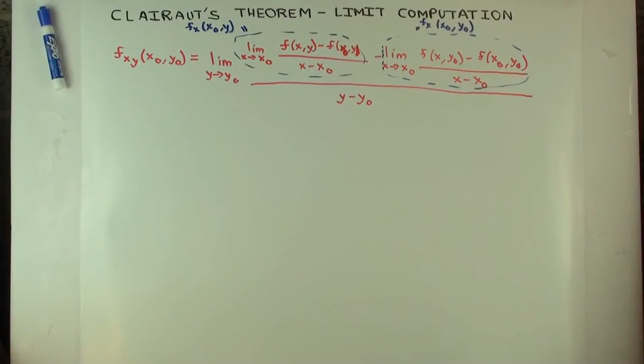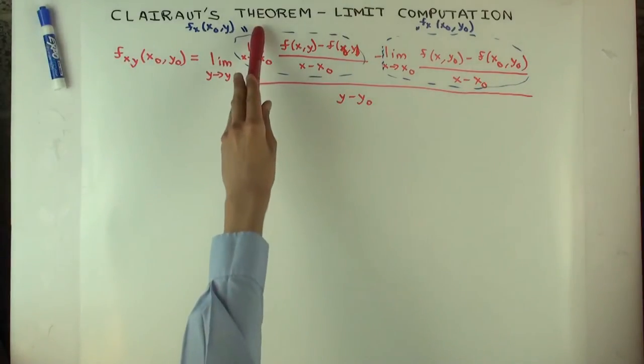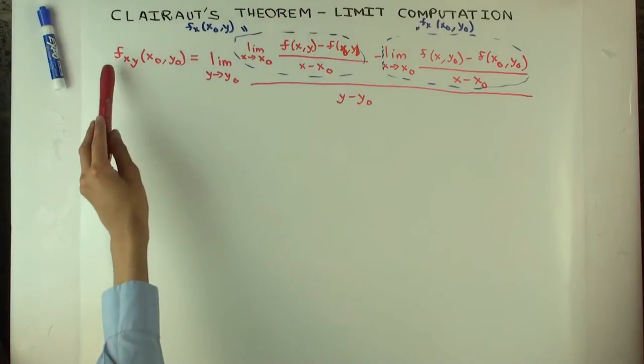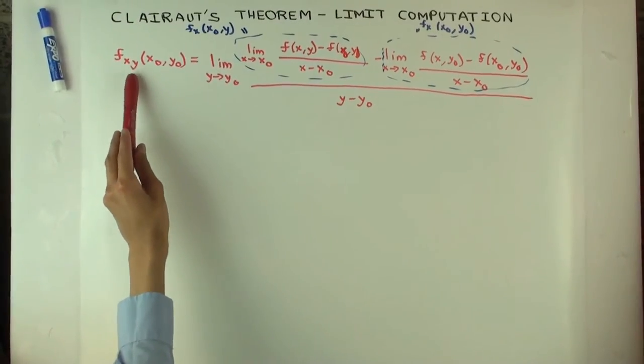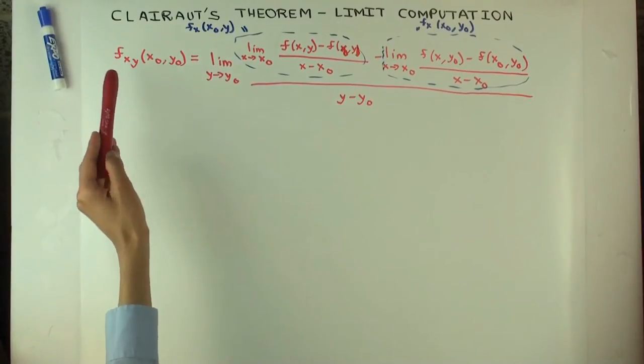Okay, so in this talk, I'm going to explain Clairaut's theorem, or rather I'm going to give part of the proof of Clairaut's theorem, which basically says that the mixed partial f sub xy and f sub yx, the two second order mixed partials, are usually equal.